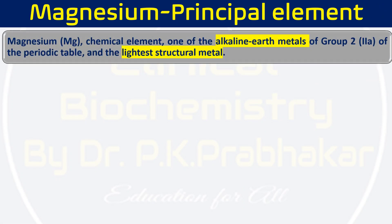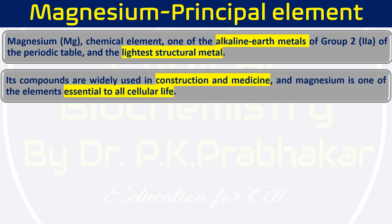Magnesium is an element falling into the alkaline earth metal group, belonging to group 2 (2A) of the periodic table, and it is the lightest structural metal. Magnesium compounds are widely used in the construction of medicines, and magnesium is one of the elements essential for almost all cells, with a number of different functions in our cells.